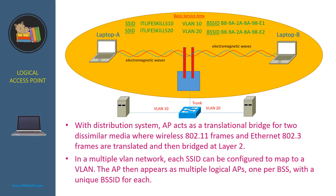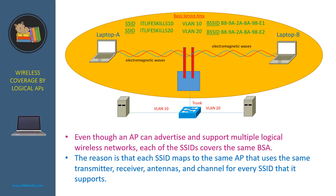The AP then appears as multiple logical APs, one per BSS with a unique BSS ID for each. In this wireless network, we can configure this access point with multiple SSIDs. The first is IT LiveSkills 10 and it maps to VLAN 10 with its own BSS ID. The second is IT LiveSkills 20 and it maps to VLAN 20 with its own BSS ID. Even though an AP can advertise and support multiple logical wireless networks, each of the SSIDs covers the same Basic Service Area, because each SSID maps to the same AP that uses the same transmitter, receiver, antenna, and channel for every SSID supported.